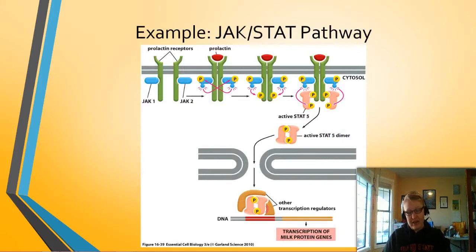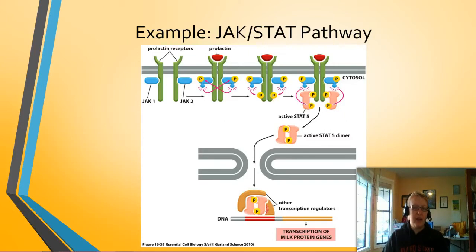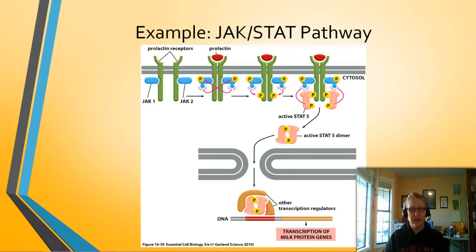Another example is the JAK-STAT pathway, and this one's a little different. The two proteins come together with the signal prolactin, and the JAKs become activated. The STATs then bind to them. STATs are signal transducers and activators, and they differ because they are not RTKs — they are associated with a special cytoplasmic enzyme known as the tyrosine kinase. These activated STATs remove themselves from the receptors, travel through the cell, and activate transcription. This is a slightly different variation on how enzyme coupled receptors work.